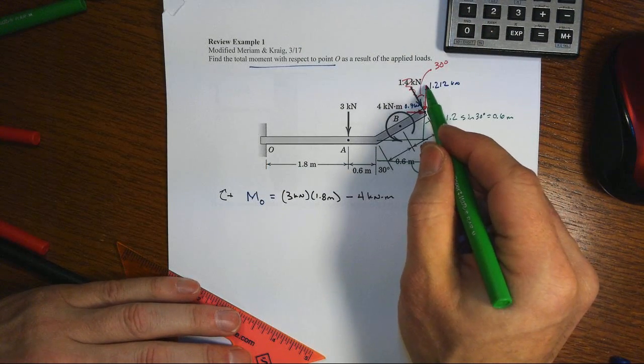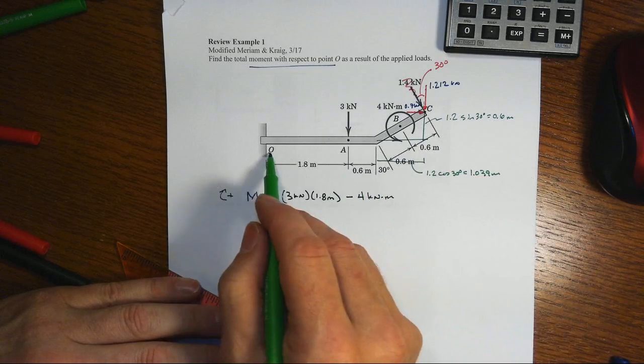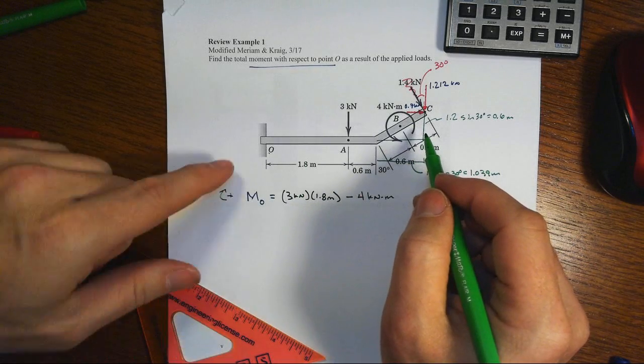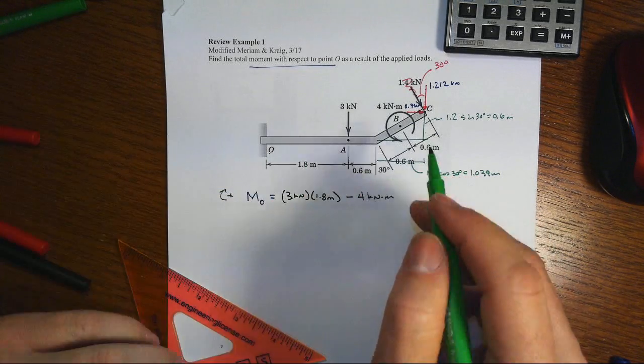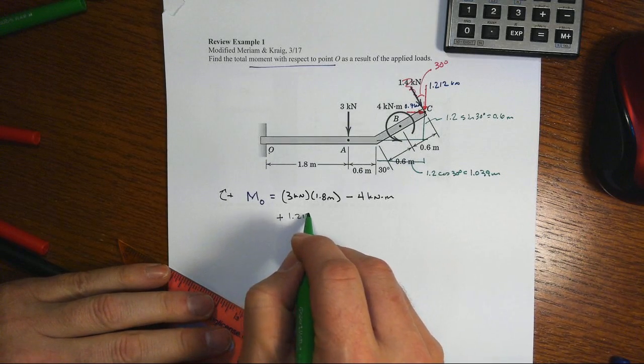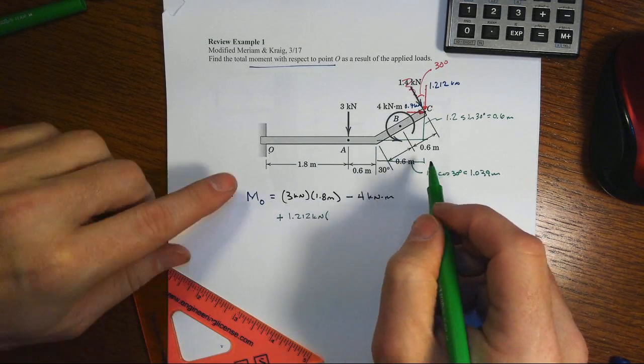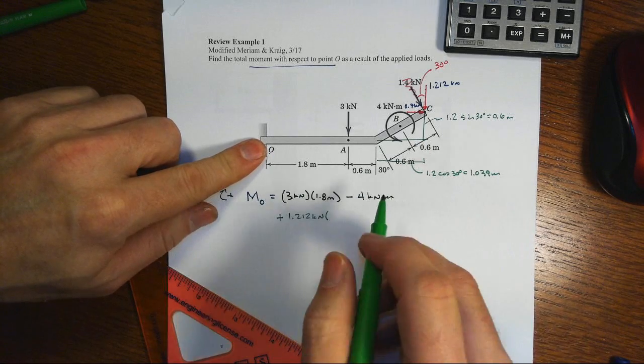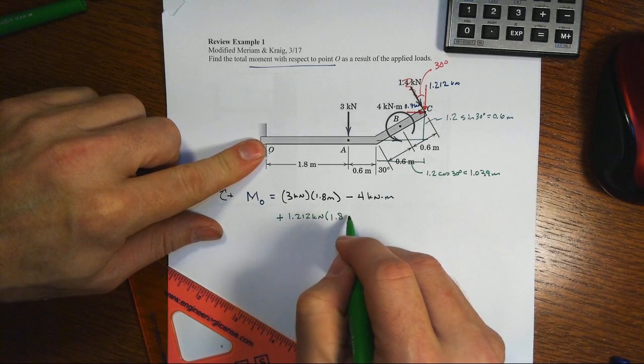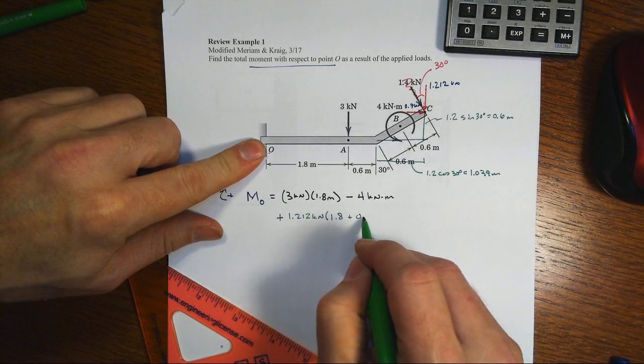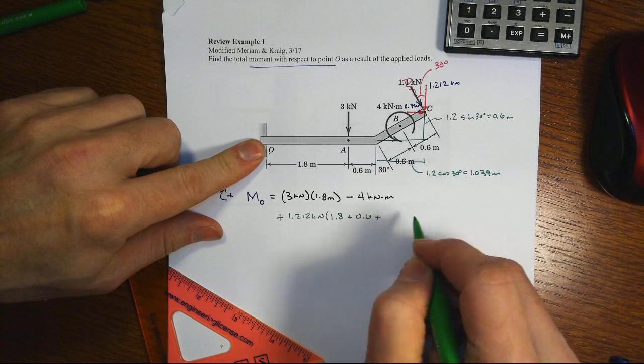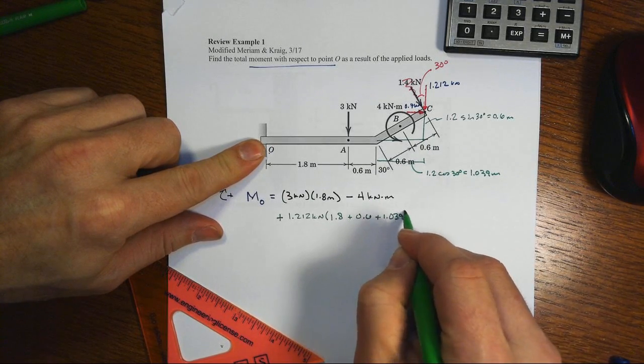So when we come along, our Y component will have this total distance to be dealt with. It's going to go in a clockwise fashion, so it's going to be plus 1.212 kilonewtons, times the total perpendicular distance to its line of action: 1.8 meters plus 0.6 meters plus our 1.039 meters.